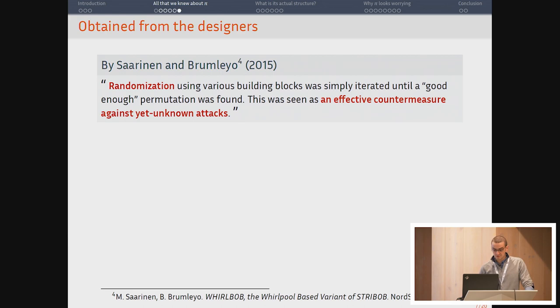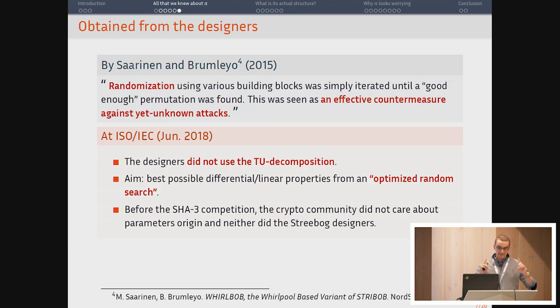Cryptographers have tried to discuss with the designers because they go to conferences sometimes. So Marko Johann Nisarinen and his co-author for World Bob, which was a Caesar candidate based on Streebog, they had a short discussion with the designers of these algorithms. And the designers said that they had used some randomization using various building blocks, and that this was seen as an effective countermeasure against yet unknown attacks, which is coherent with the content of the previous slide. At ISO, what they say is that they did not use the TU decomposition to design their S-Box. Their aim was to have the best possible differential and linear properties obtained from some random search, which they do not explain.